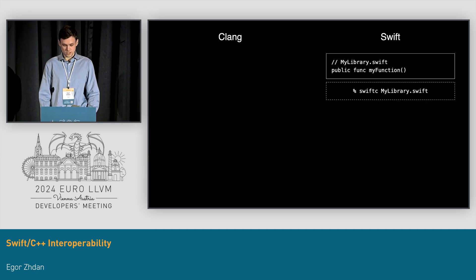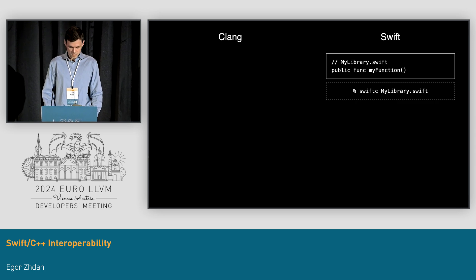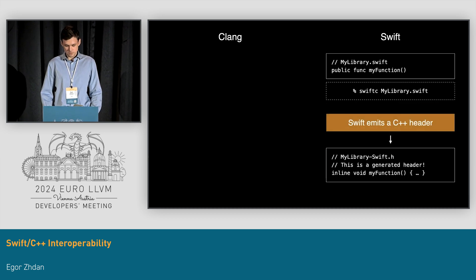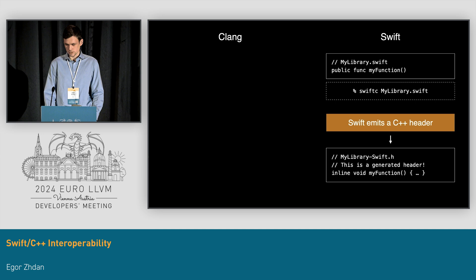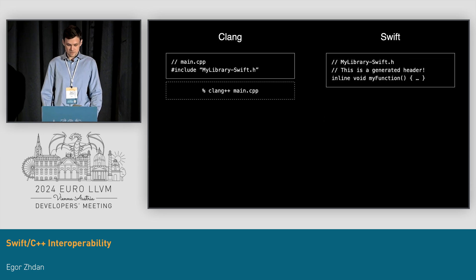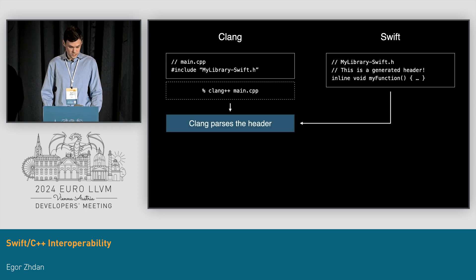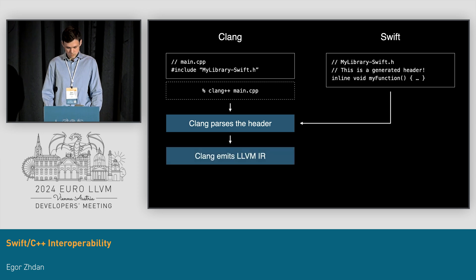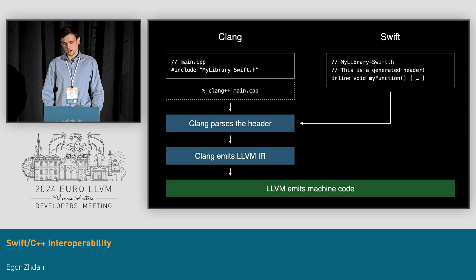How does this work if we want to do the opposite — use a Swift library from C++ code? If we have a Swift library that declares a public Swift function, during compilation Swift will emit not only the resulting binary for the library, but also a C++ header that provides an interface for C++ to call into the Swift APIs. The header will have a function declared as inline in C++ for better performance that calls directly into the Swift function. A C++ source file can then just include the generated C++ header and invoke Clang, which will emit IR containing calls into the Swift binaries. Then LLVM emits machine code as usual.